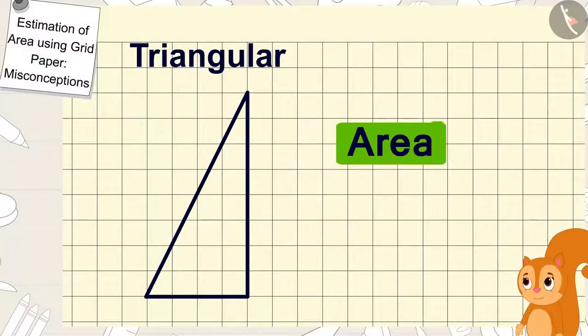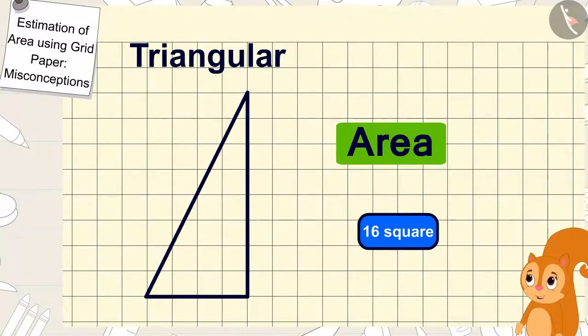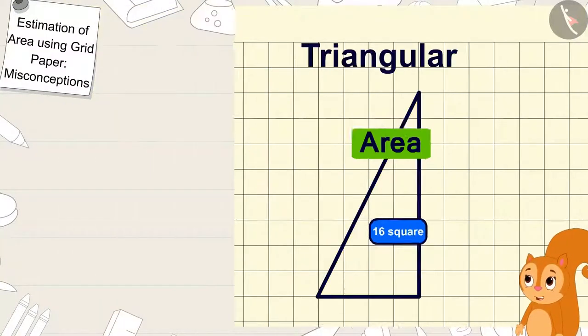Chanda too found the area of the triangle shaped plate just like you. Hey Gaggoo, there are sixteen squares in the area of this triangle shaped plate too. You are right.